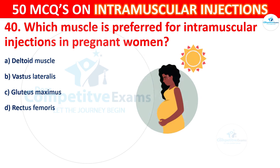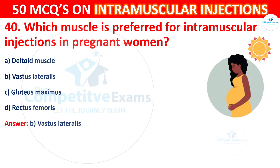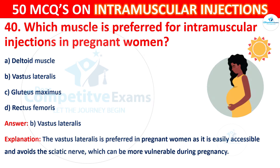Question 40: The correct answer is B, vastus lateralis. The vastus lateralis is preferred in pregnant women as it is easily accessible and avoids the sciatic nerve, which can be more vulnerable during pregnancy.